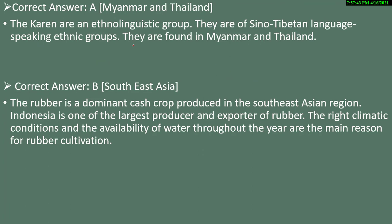The Karen are an ethno-linguistic group speaking Sino-Tibetan languages, found in Myanmar and Thailand. For question 16, rubber is a dominant cash crop of the Southeast Asian region. Indonesia is the largest producer and exporter of rubber. The right climatic conditions — warm climate with availability of water throughout the year — are the main reason for such high rubber production there.